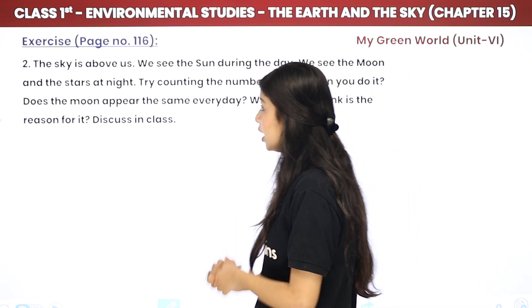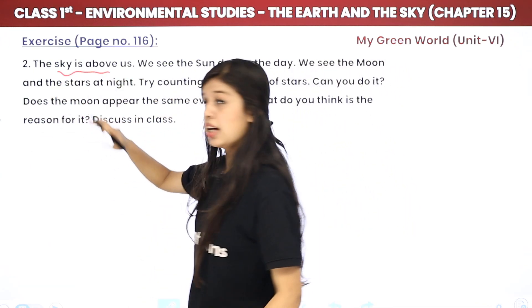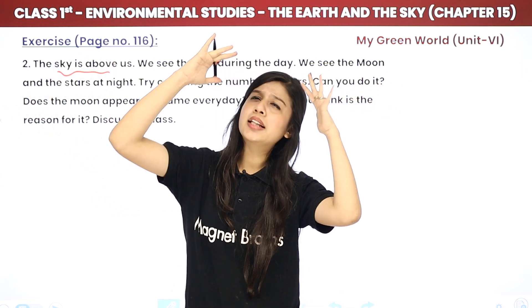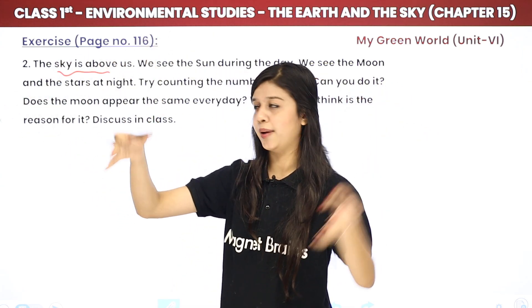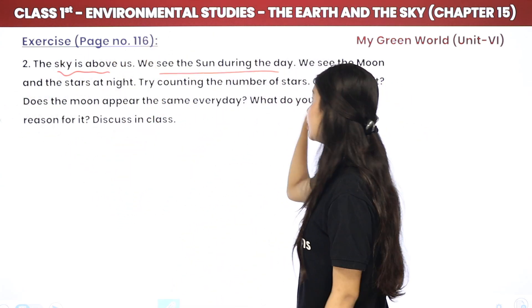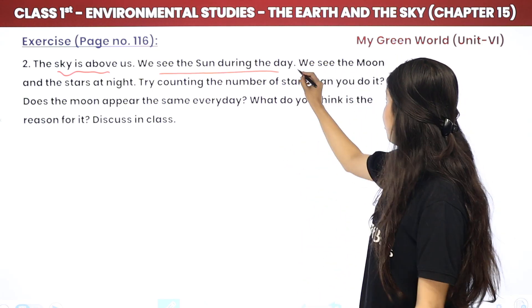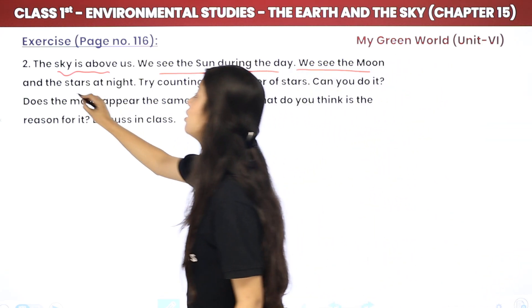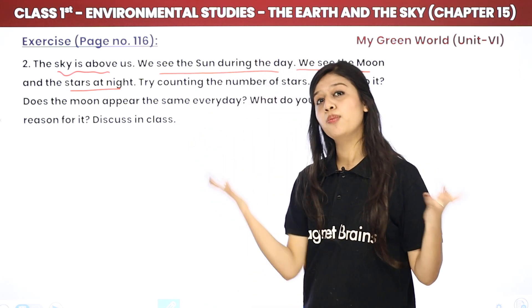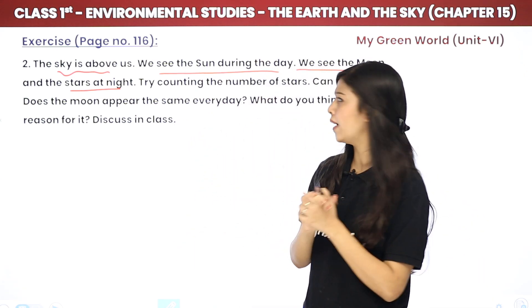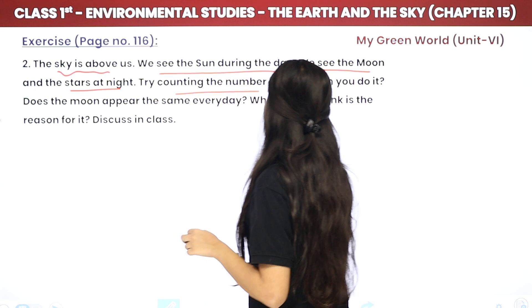So yeh saari cheezein ho gayin: jo twinkle kare woh STARS, jo daytime pe shine kare woh SUN, jo nighttime pe shine kare cool light de woh MOON, aur jis pe hum rehte hain woh planet hai EARTH. Clear to you? Now move to the next activity. The sky is above us — obviously upar dekhte hain. We see the sun during the day and we see the moon and the stars at night.